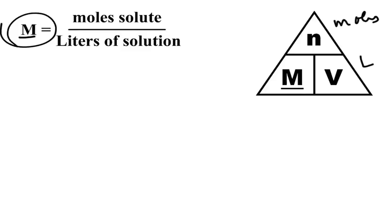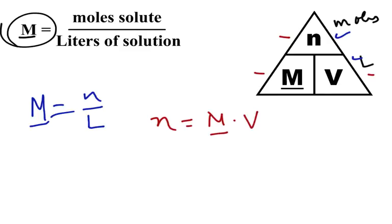For example, if we say I want molarity, then molarity equals the number of moles divided by the number of liters. If we wanted to do number of moles, the number of moles here would be molarity times volume. And finally, if we were trying to go for volume, we can say volume is the number of moles divided by the molarity.